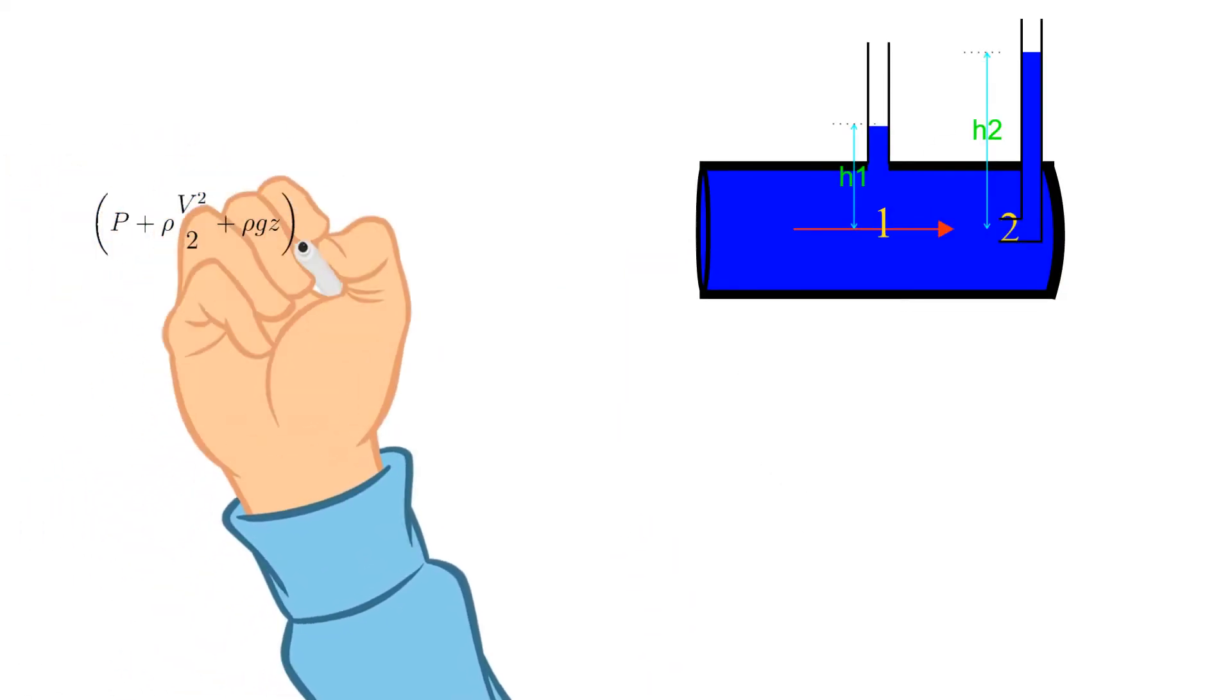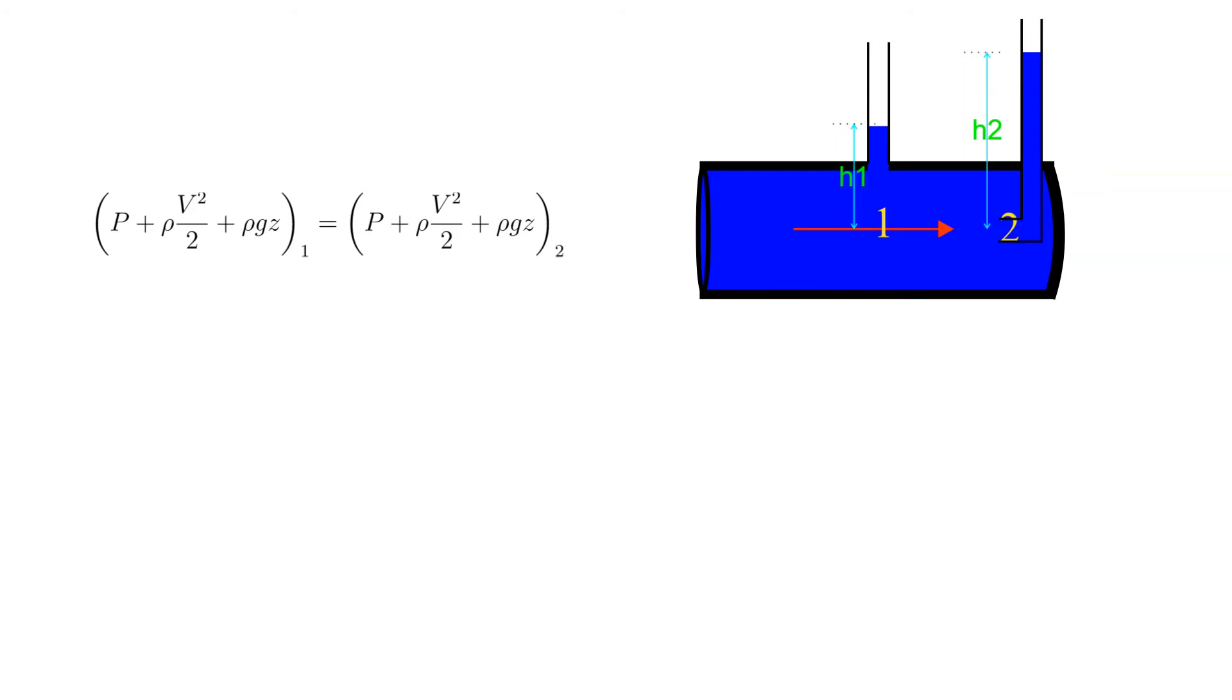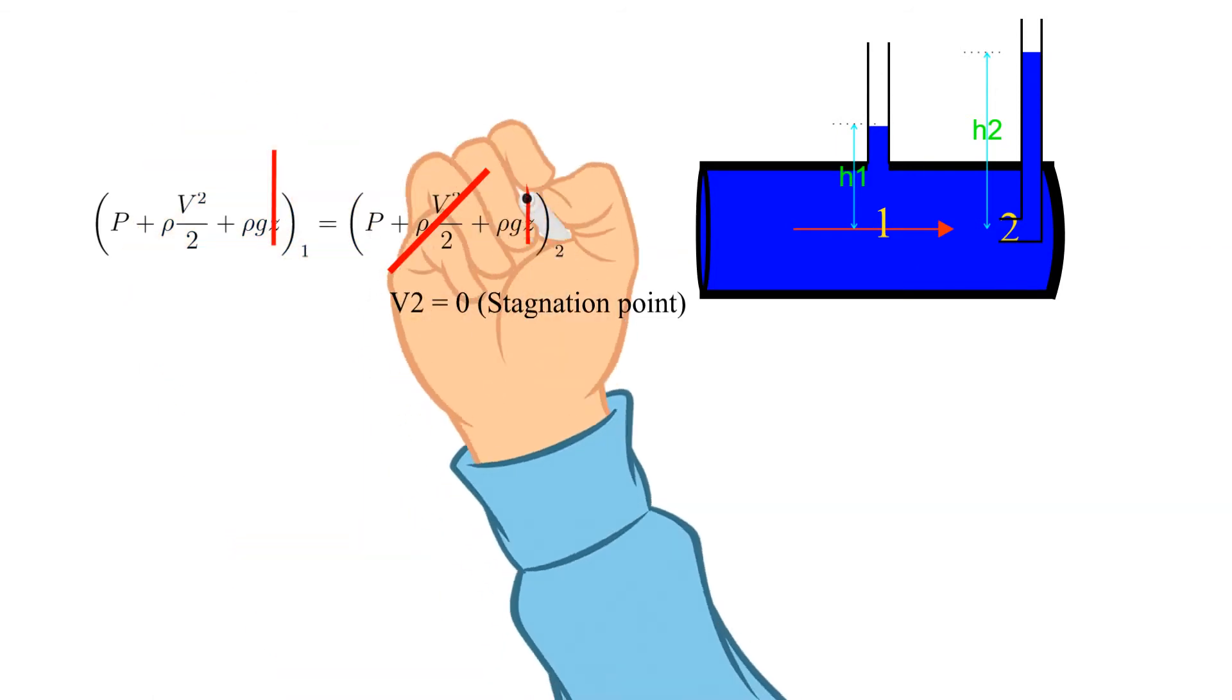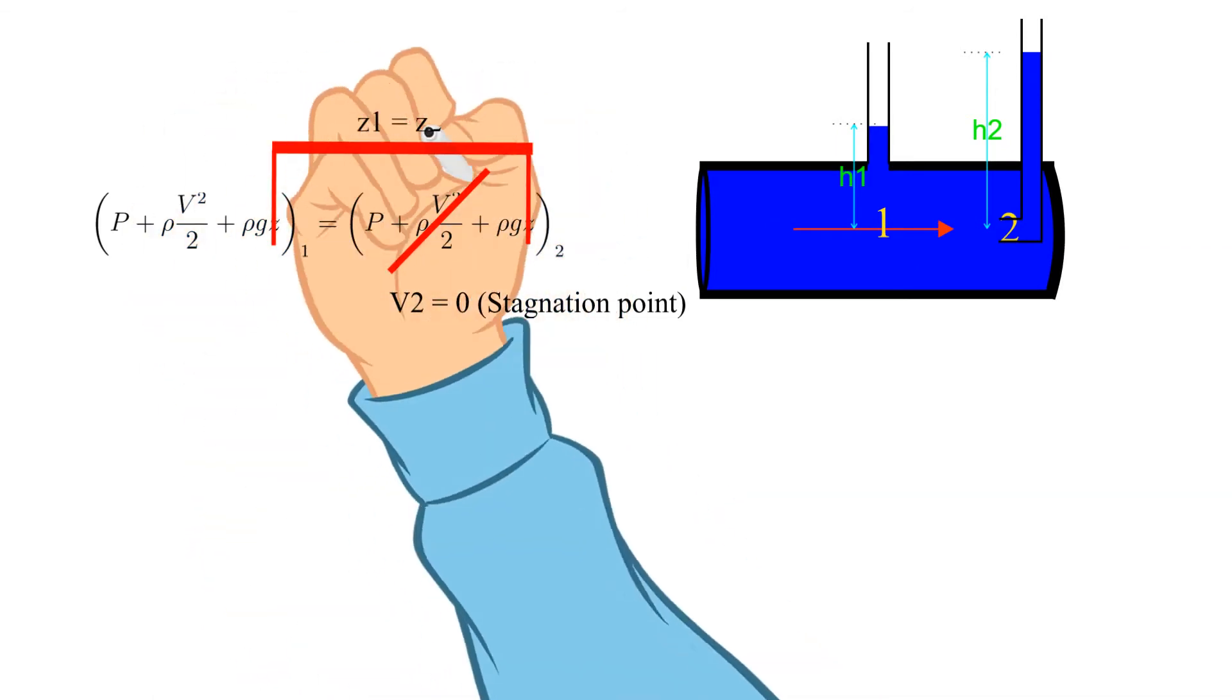Let's write down Bernoulli's equation from point one to point two. Next let's simplify. The velocity at point two is zero since it is a stagnation point. The elevations Z1 and Z2 are equal and cancel out.